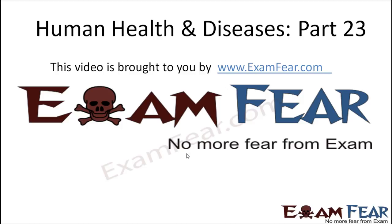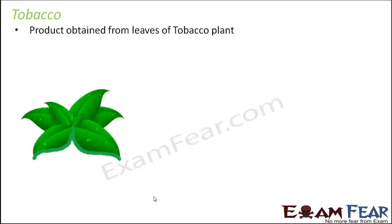Hello friends, this video on human health and diseases part 23 is brought to you by examfear.com. So these were the important drugs, or the commonly used drugs rather. Now we will talk about another important thing which is extremely harmful for the body but is quite frequently used by people - tobacco. Tobacco is a product which is obtained from the leaves of the tobacco plant. Most of these drugs are obtained from different plants.